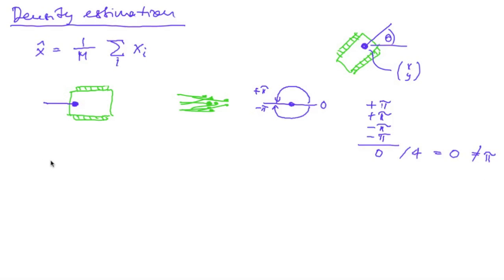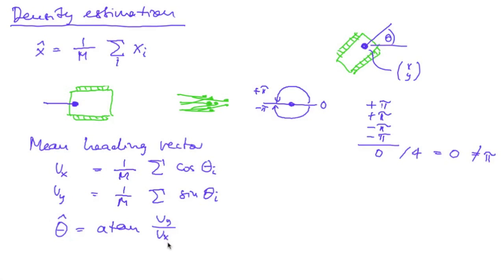And so what I propose here is, instead of computing the mean angle, we compute the mean heading vector. So we compute the vector xy. The vector x is just the mean of all cosines of theta i, the heading angle of the particle i. And vy is the same for the sine. And then after we compute this, our final estimate for the heading angle is the arctangent of vy divided by vx.